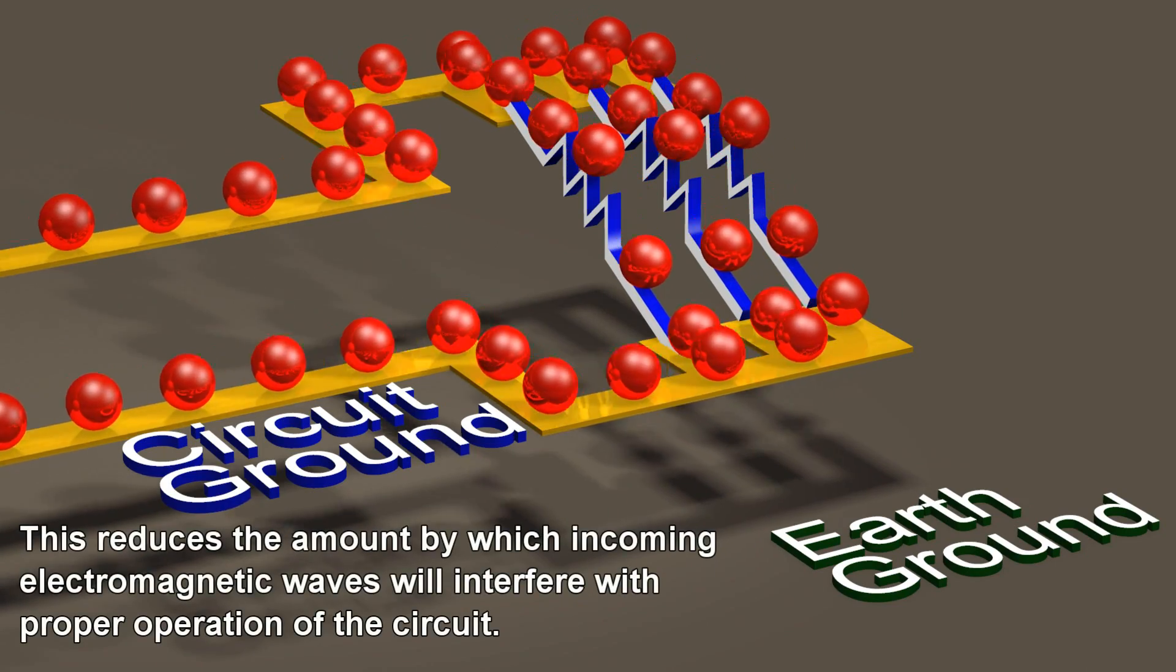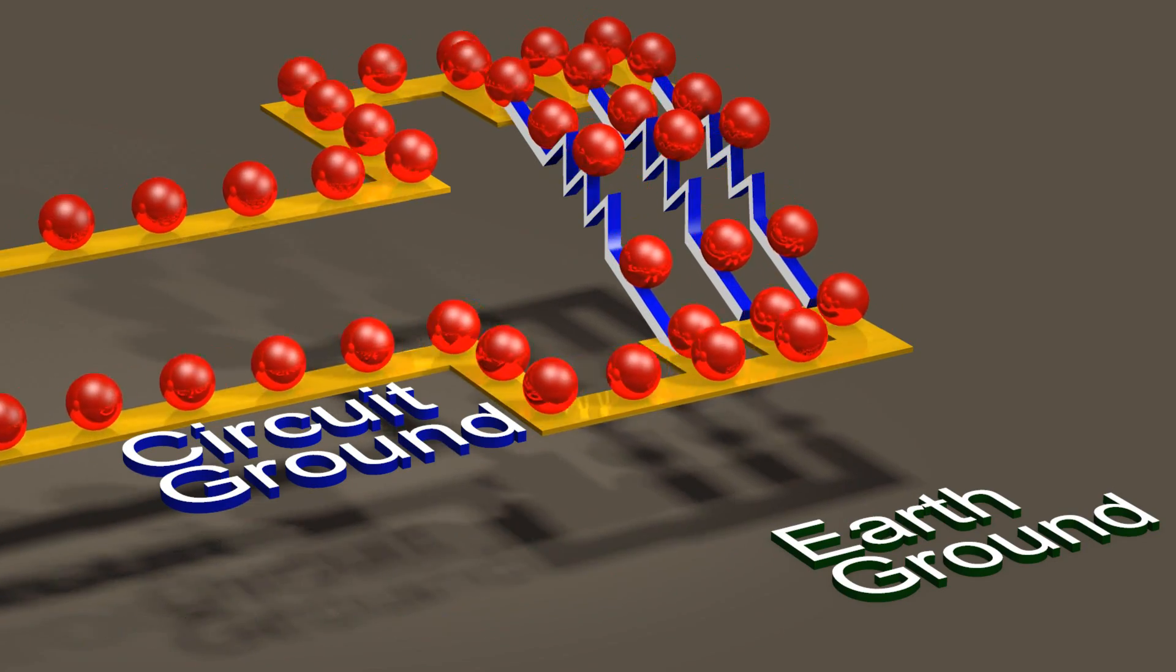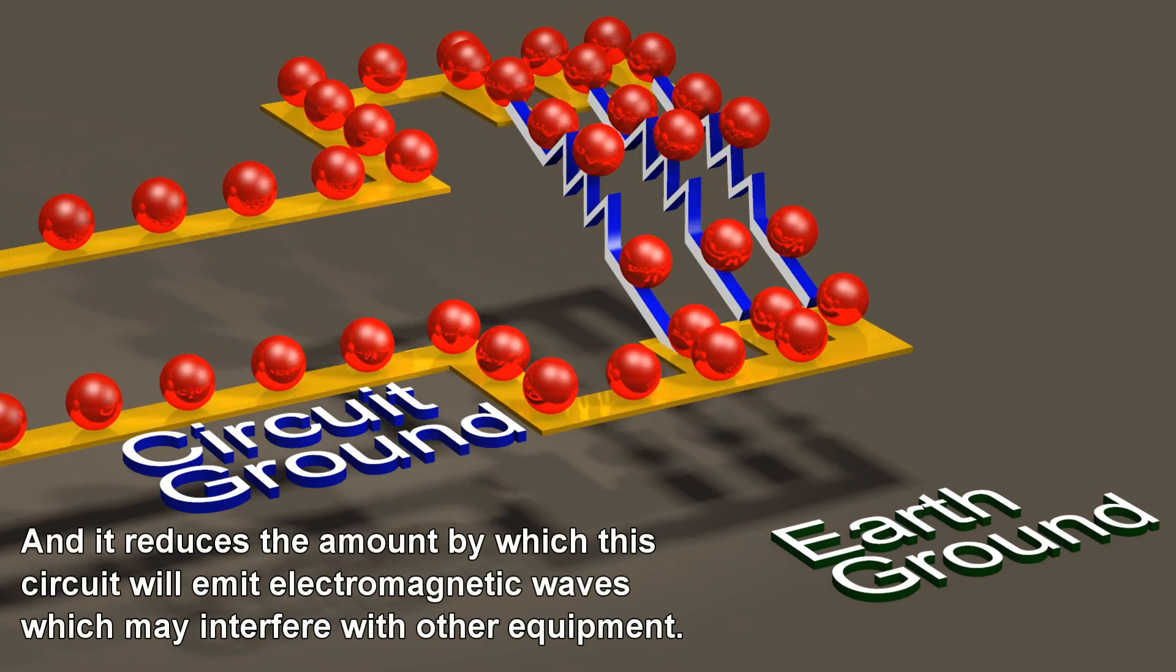This reduces the amount by which incoming electromagnetic waves will interfere with proper operation of the circuit, and it reduces the amount by which this circuit will emit electromagnetic waves which may interfere with other equipment.